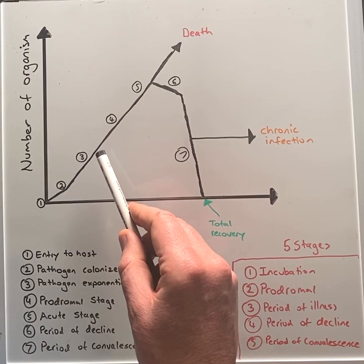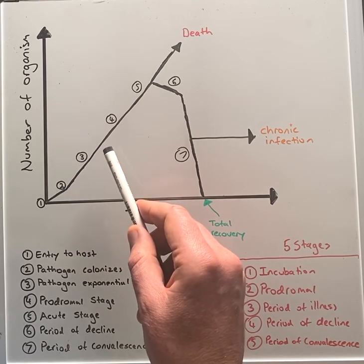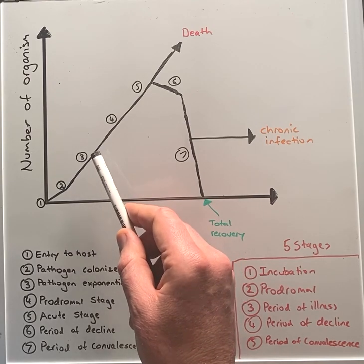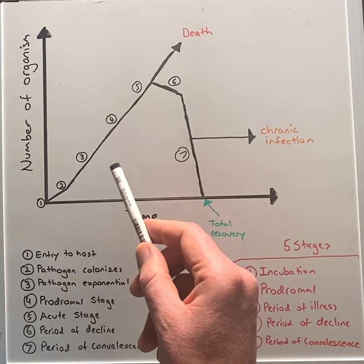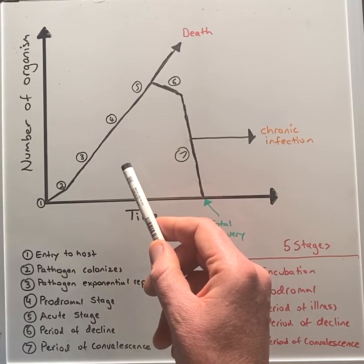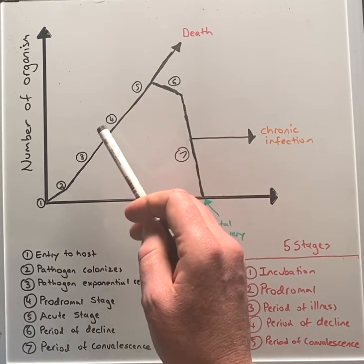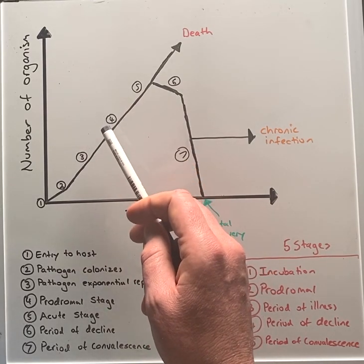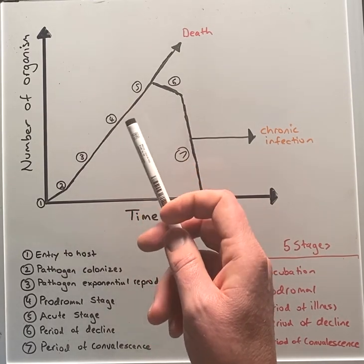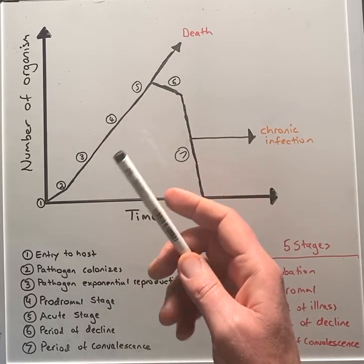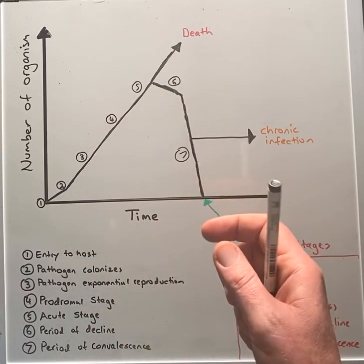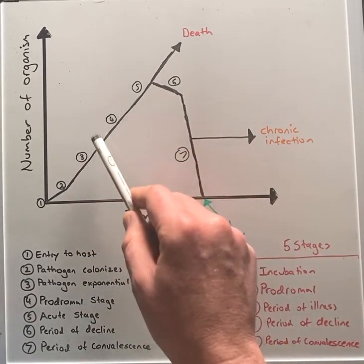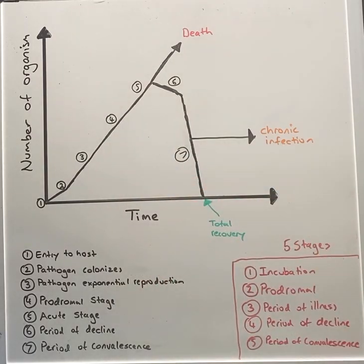From step three, the microorganism will start to reproduce and the number will increase to the point where you may start to see signs and symptoms. Step four, the prodromal period is where early non-specific symptoms will manifest, such as fatigue, headache, fever, and loss of appetite. These symptoms will result from the activation of the host's immune system.